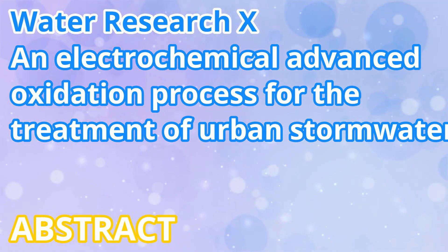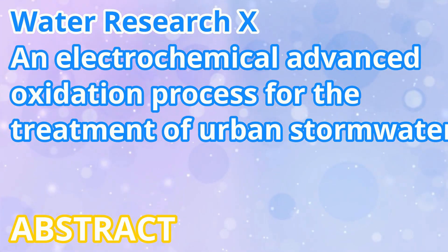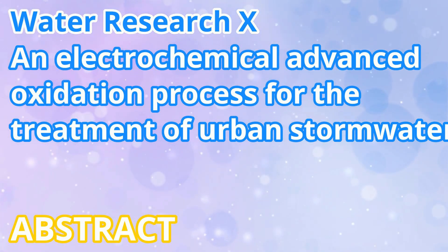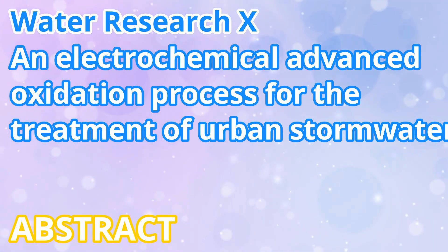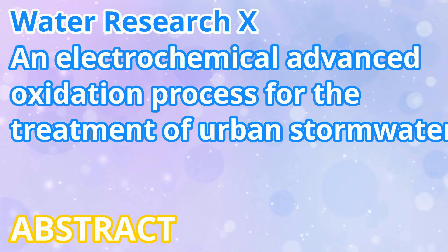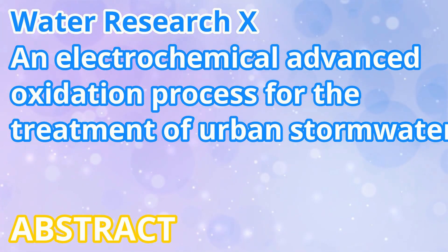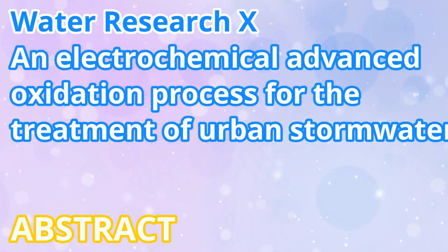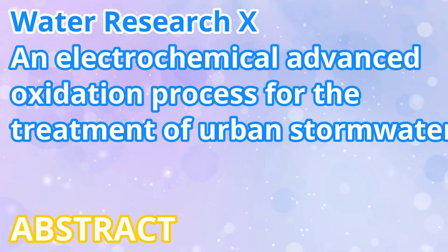The system employed an air diffusion cathode to generate a H2O2 stock solution — typically around 600 mM — prior to the storm event. The H2O2 stock solution was then metered into stormwater and converted into hydroxyl radical (•OH) by an ultraviolet lamp.